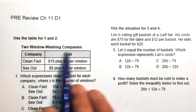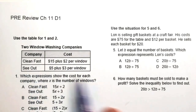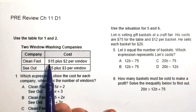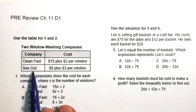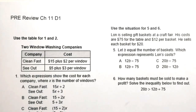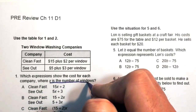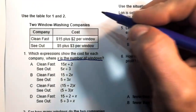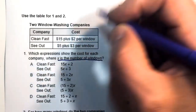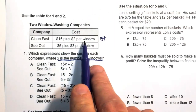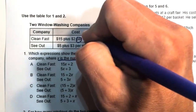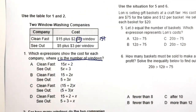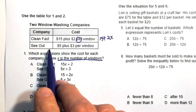Number one: two window washing companies are represented in the table below. Clean Fast charges $15 plus $2 per window, and C-Out charges $5 plus $3 per window. Number one asks which expressions show the cost for each company, where X is the number of windows. They've defined our variable for us, so since X is the number of windows, Clean Fast will be 15 plus 2x.